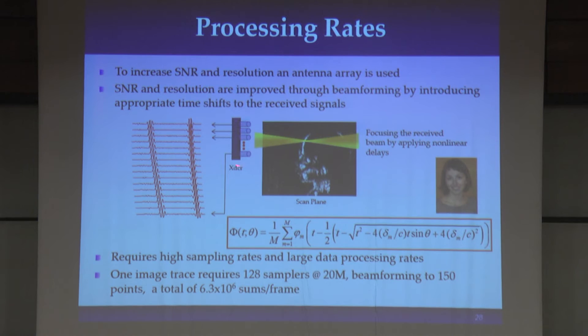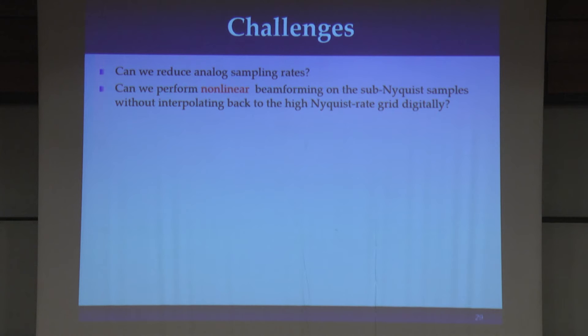In order to perform these nonlinear distortions, we have to do this on a very fine grid, which means we end up sampling at very high rates. You have to sample each one of the elements at a high rate and then combine all of the data — with 256 elements, that's a massive amount of data that has to be beamformed to every point of the image, creating a huge bottleneck. So it's not really the sampling rate that is the big bottleneck, it's the processing rate. It's not only the sampling rate we want to reduce — the question is, if I reduce the sampling rate and don't have this fine grid, how am I going to do this nonlinear interpolation once I've reduced the sampling rate?